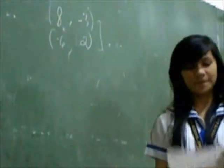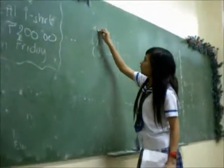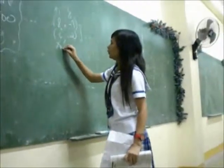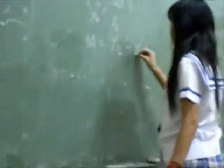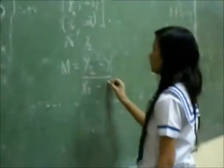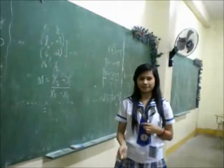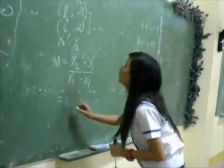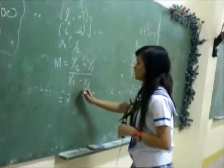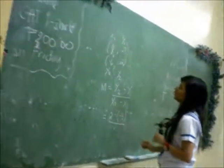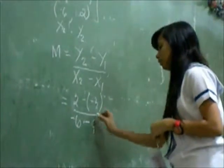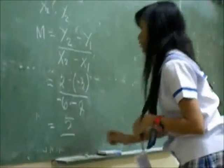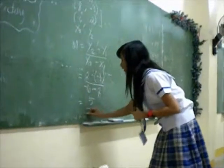Using the slope formula, we substitute: m equals (y2 minus y1) over (x2 minus x1), which is (4 minus negative 3) over (negative 6 minus 8), giving us 5 over negative 14.